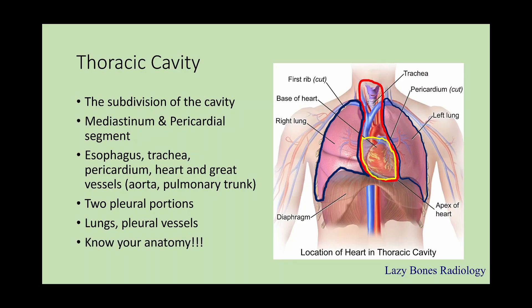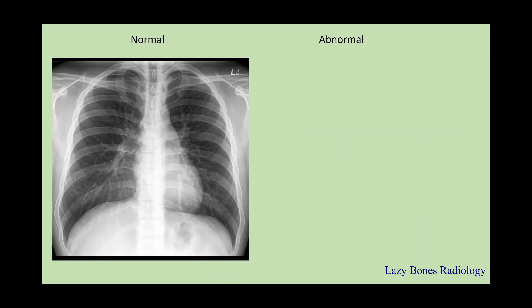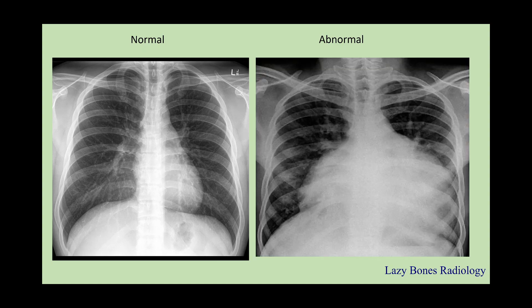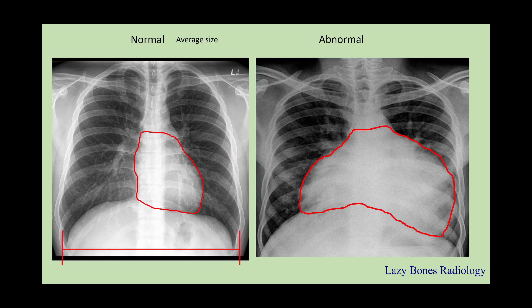It is important to know the internal organs within each subdivision because being familiar with the anatomy will allow you to know how normal anatomy compares to an abnormal image. Here's a normal x-ray and here's an abnormal chest x-ray. As you can see, I highlighted the hearts on both x-rays. On the left-hand side, this is an average size heart, while on the right-hand side, the heart is enlarged. This is known as cardiomegaly.